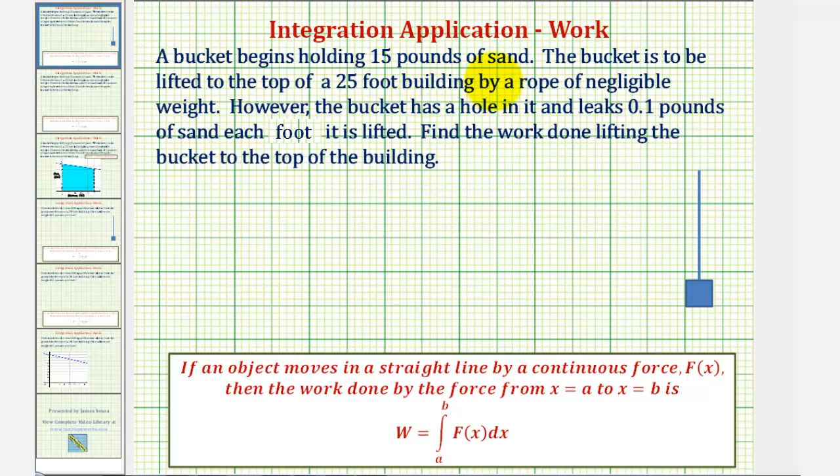A bucket begins holding 15 pounds of sand. The bucket is to be lifted to the top of a 25 foot building by a rope of negligible weight. However, the bucket has a hole in it and leaks 0.1 pounds of sand each foot it is lifted. Find the work done lifting the bucket to the top of the building.